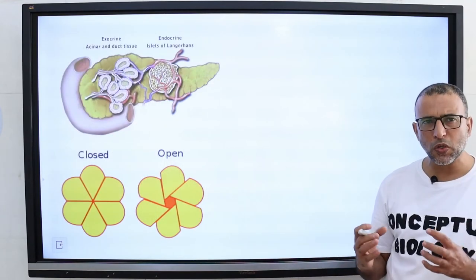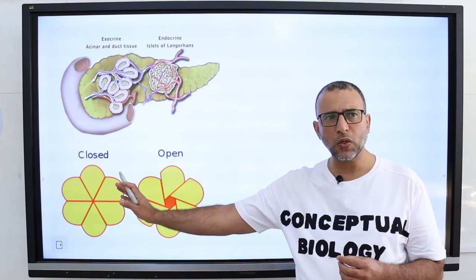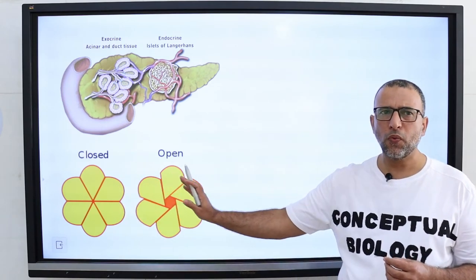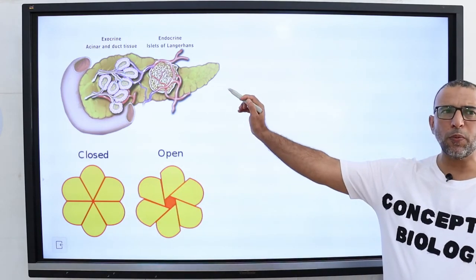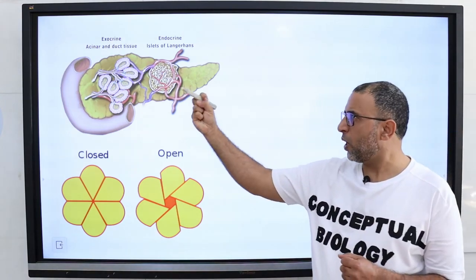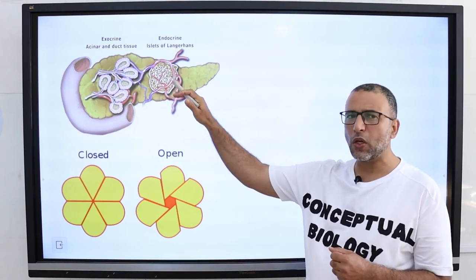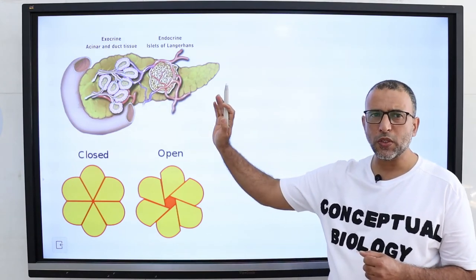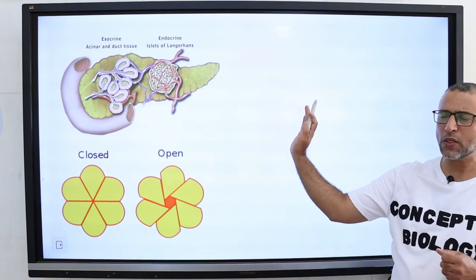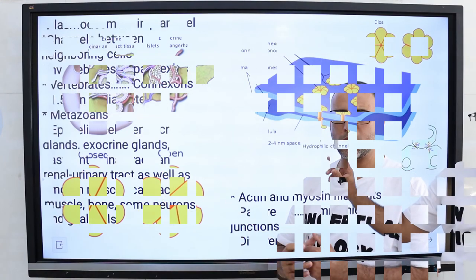Cells control the passage of materials through gap junctions by opening and closing the channel. For example, cells in the pancreas are linked by gap junctions. If one cell is stimulated to secrete insulin hormone, the signal is passed through the gap junctions to other cells in the cluster, making gap junctions communicating junctions.